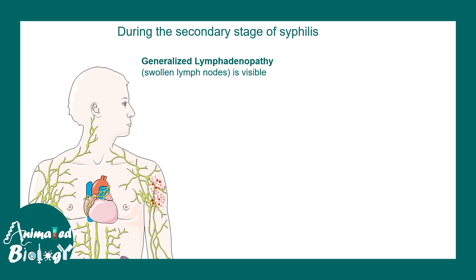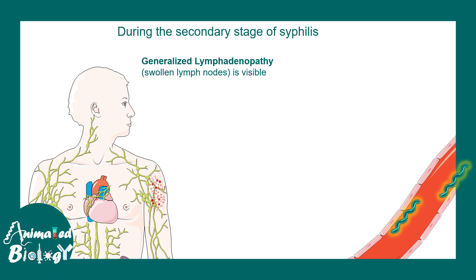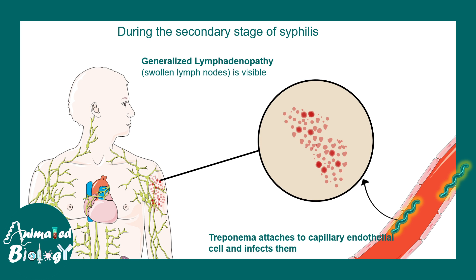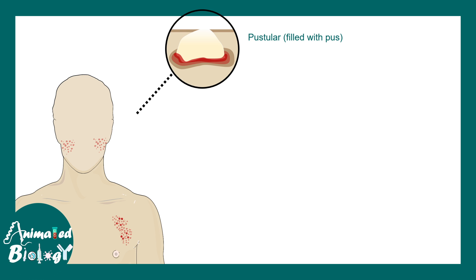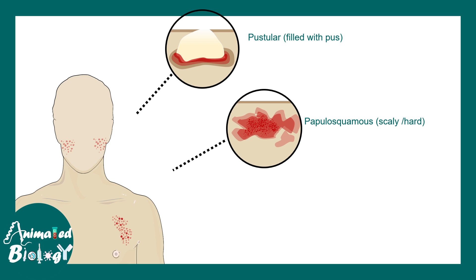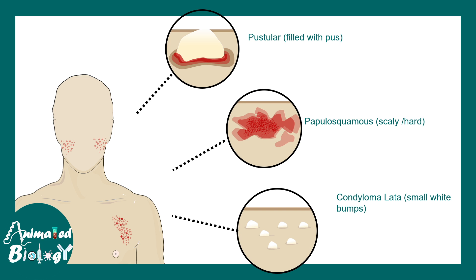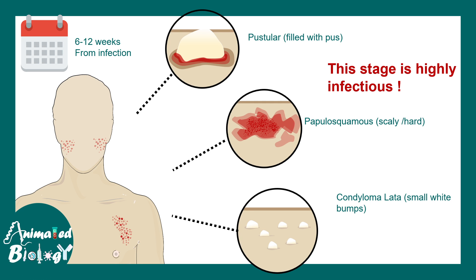During the secondary stage, alongside lymphadenopathy, syphilis moves to the bloodstream and can cause itchy maculopapular rash. There are different kinds of rashes: pustular rashes filled with pus, papulosquamous rashes which are scaly hard rashes on the skin, and condyloma which are white small bumps on the skin. These distinct rash types appear around 6 to 12 weeks from infection, and this stage is very highly infectious.